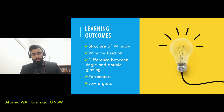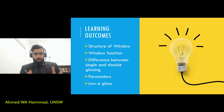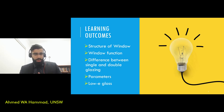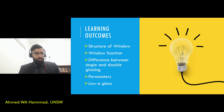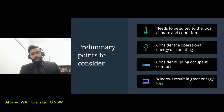Some of the learning outcomes for this video. Number one, I'm going to be talking about what the structure of a window looks like. Number two, I'll be talking about the functions of a window in a building. Number three, I'll be describing the differences between single glazing and double glazing windows. Number four, we'll be talking about certain parameters that need to be assessed when it comes to window selection. And finally, I'll briefly touch upon the topic of low-e glass and what it means.